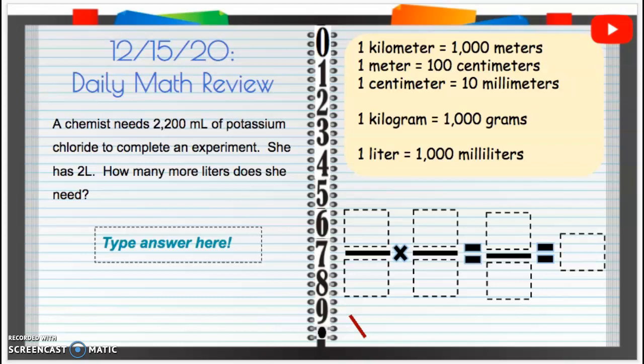December 15th, 2020 Daily Math Review. A chemist needs 2,200 milliliters of potassium chloride to complete an experiment. She has two liters. How many more liters does she need?